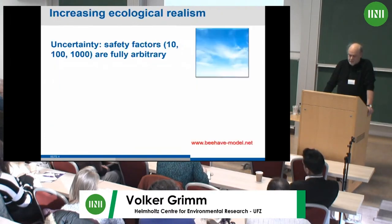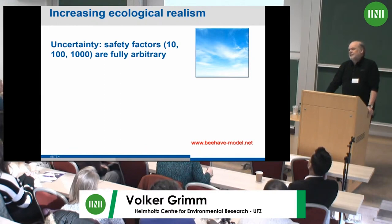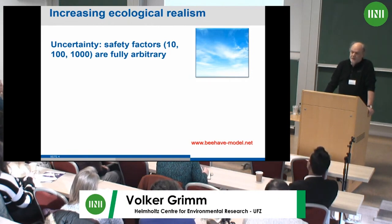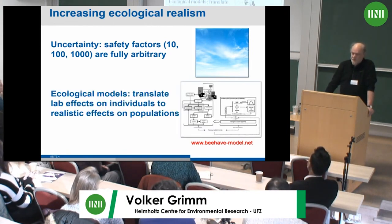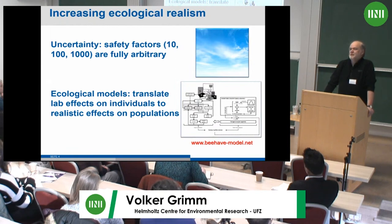This tiered approach works to some degree, but the safety factors are essentially arbitrary — taken out of the blue sky. Maybe 500, maybe less. They may well be too protective or underprotective — nobody really knows. That's why people ask: why not use ecological models? Take the toxicity measure from the lab and the exposure data, put them into an ecological model — for example of honeybees — run the model, and get a more realistic estimate of whether the population's resilience and persistence are impaired.